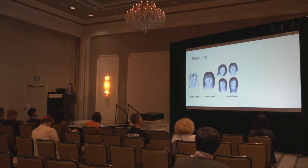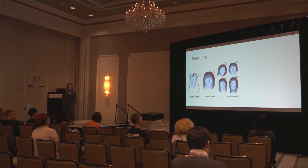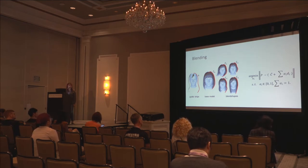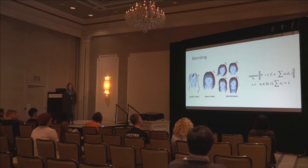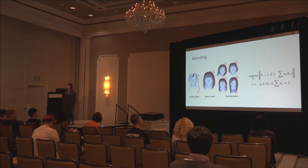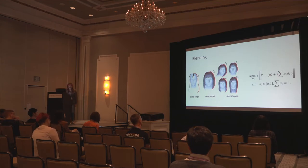Here is the blending process. Given a guide strip, we find the corresponding strips in the blend shapes and use a linear solver to solve for the blending weight alpha. Here, ĉ stands for the mean of the blend shape, and d stands for the displacement of the blend shape. To make the fitting smoother, we also introduce S and T, two scaling factors applied to our mean shape and the displacement.